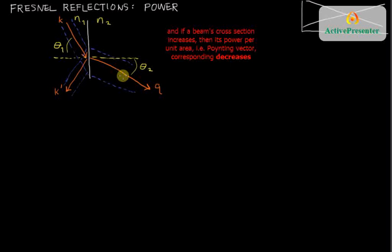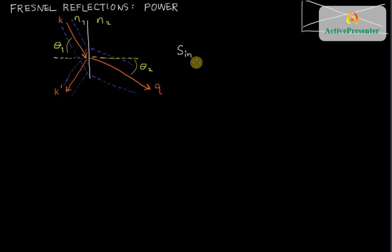We have asserted in class that the power conservation law is that the Poynting vector for the incident light has to be multiplied by this obliquity factor, cosine theta 1, when we talk about how much power it delivers to a certain area on the interface.